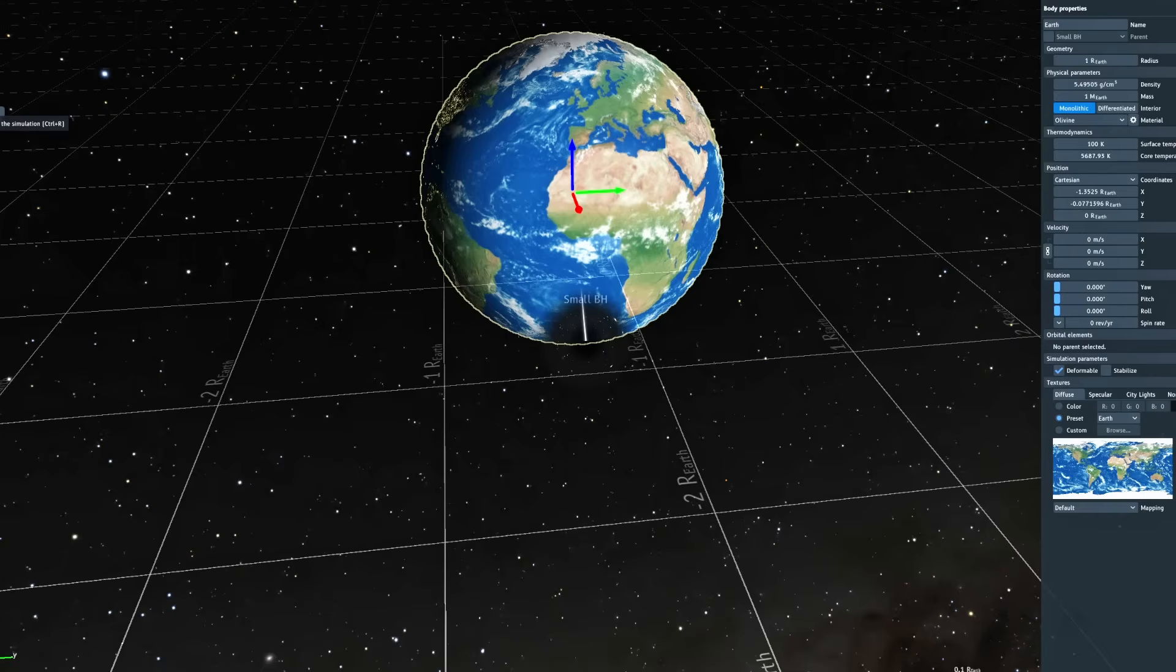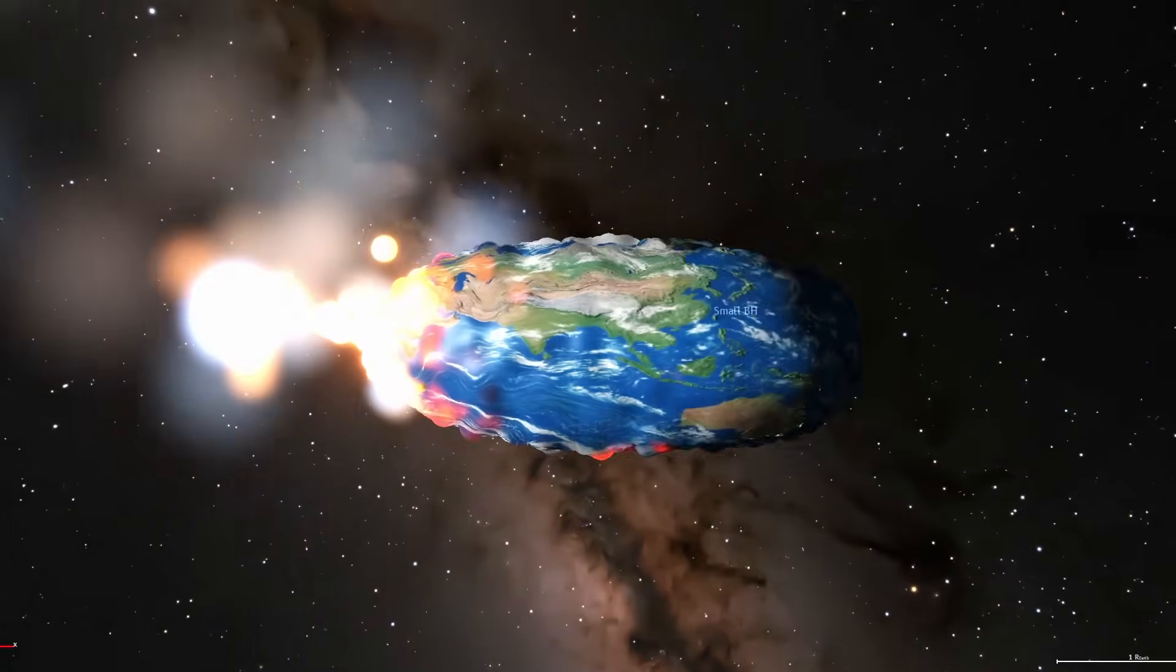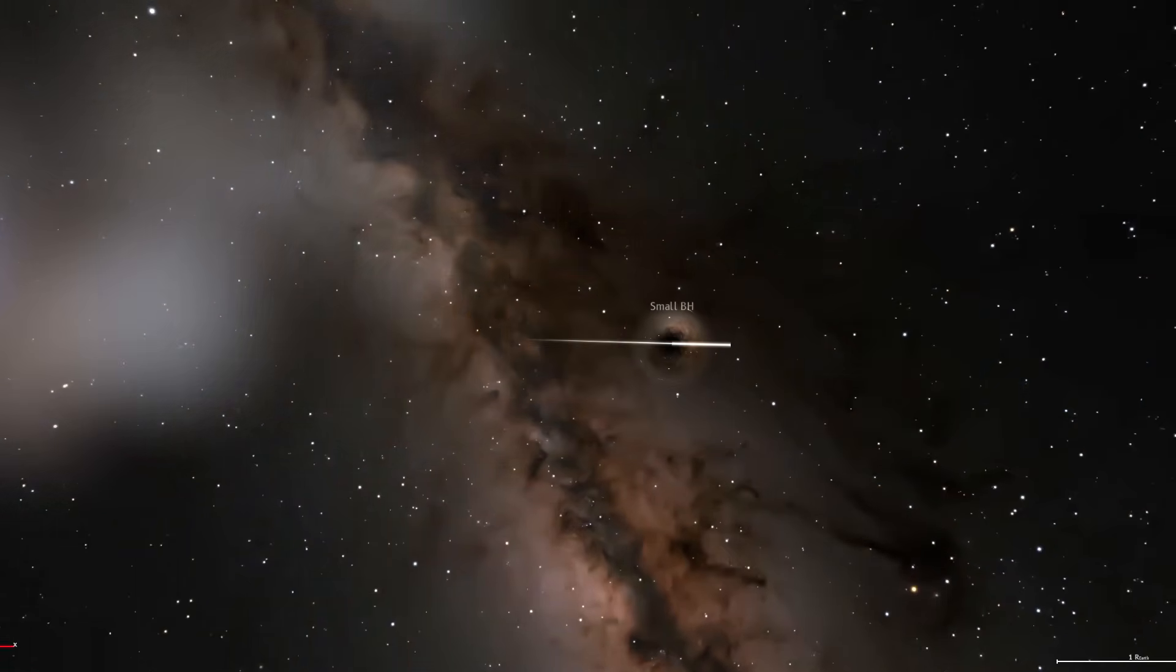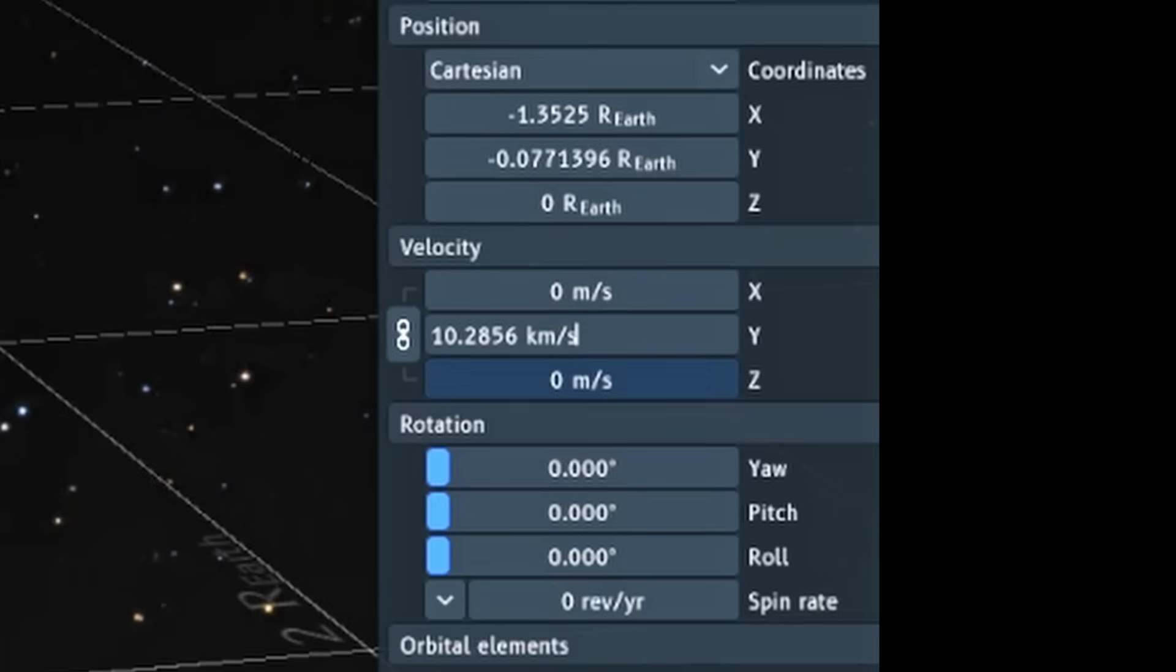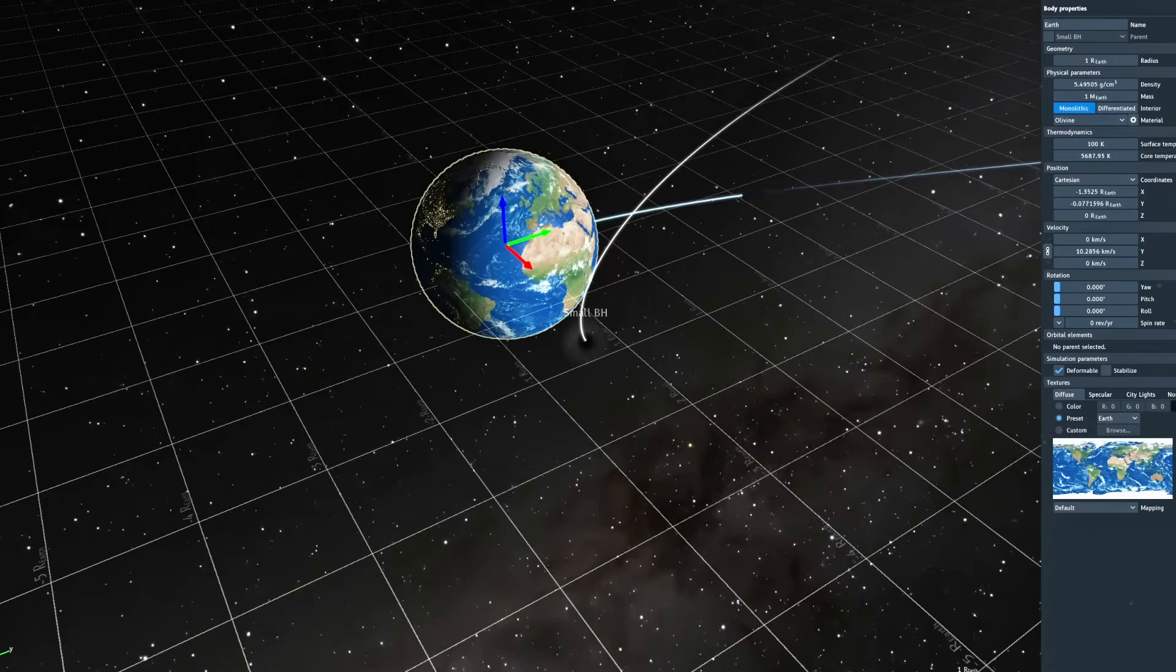But black holes when they aren't moving aren't that interesting. They kind of look like this, which I mean it's cool, but we can get more interesting. So we're actually gonna take the earth and we're gonna move it. We're gonna set its velocity here to 10 and a quarter.